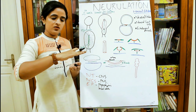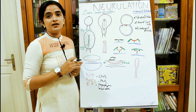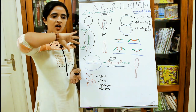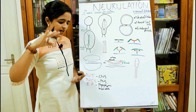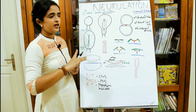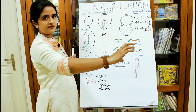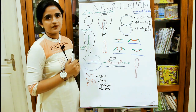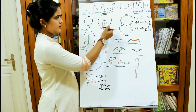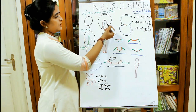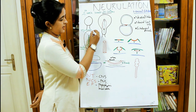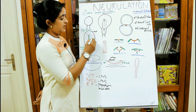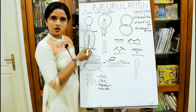The embryonic disc view: you have the ectoderm, mesoderm, and endoderm, with the amniotic cavity above the ectoderm and the yolk sac below the endoderm. Now we remove the amniotic cavity and view from above — so what you're seeing is just the ectoderm. This is the cranial end and this is the caudal end.